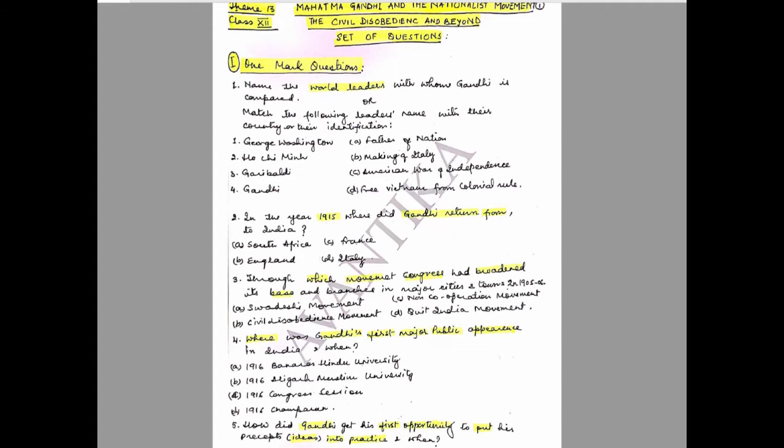Question 1: Name the world leaders with whom Gandhi is paired. This could also come as 'match the following leaders with their country or identification.' The leaders are: George Washington, Ho Chi Minh, Garibaldi, and Gandhi. Match with: A) Father of the Nation, B) Making of Italy, C) American War of Independence, D) Free Vietnam from colonial rule.